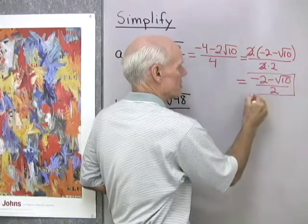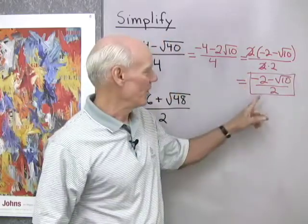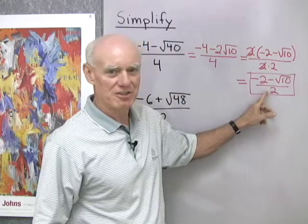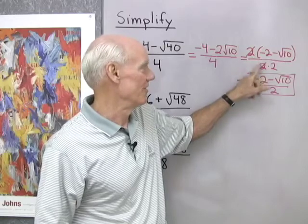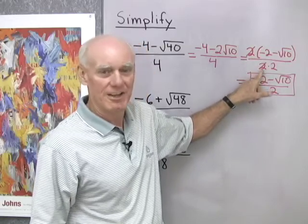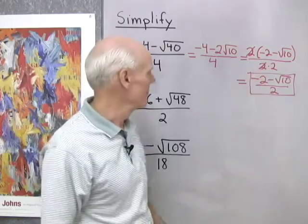So that's our answer in simplified form, and you don't want to weaken here and try to divide out these twos. That two is not a factor of the numerator. That two is a factor of the numerator, and so I can divide it out with that factor, that common factor that's in the denominator.